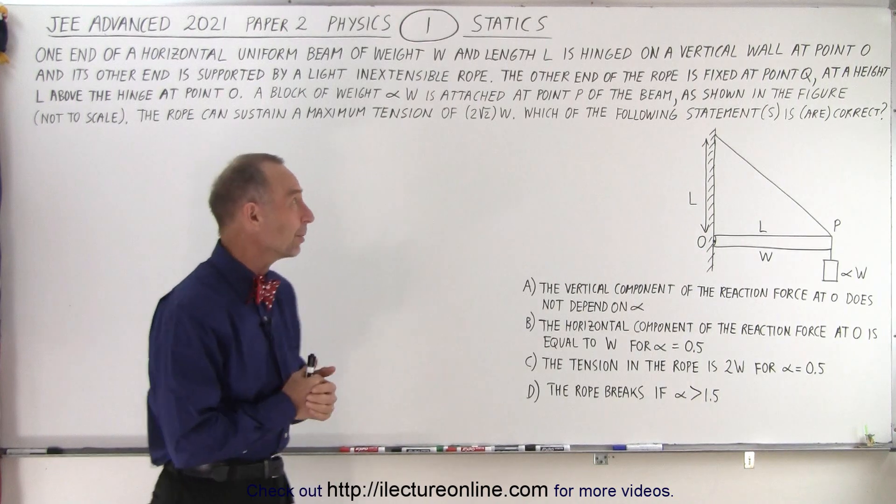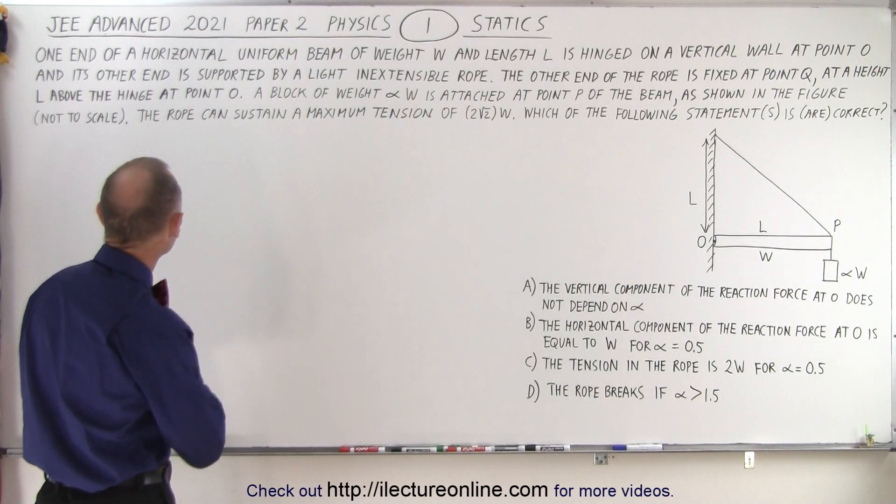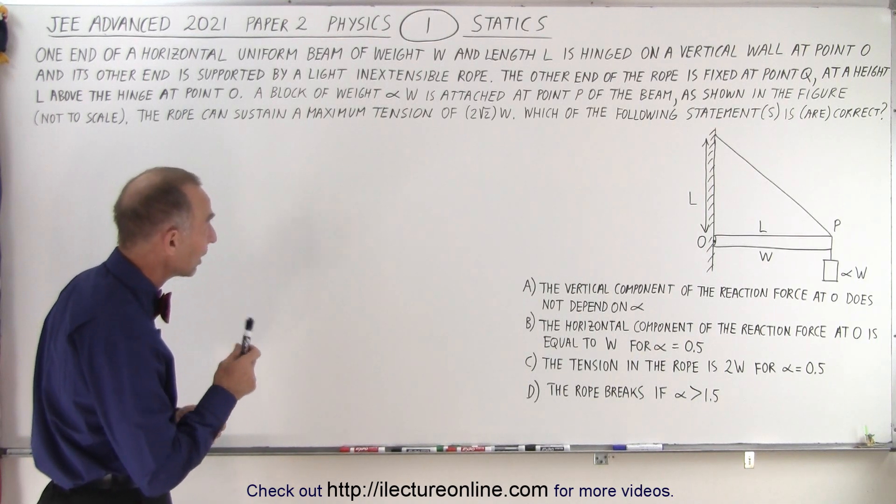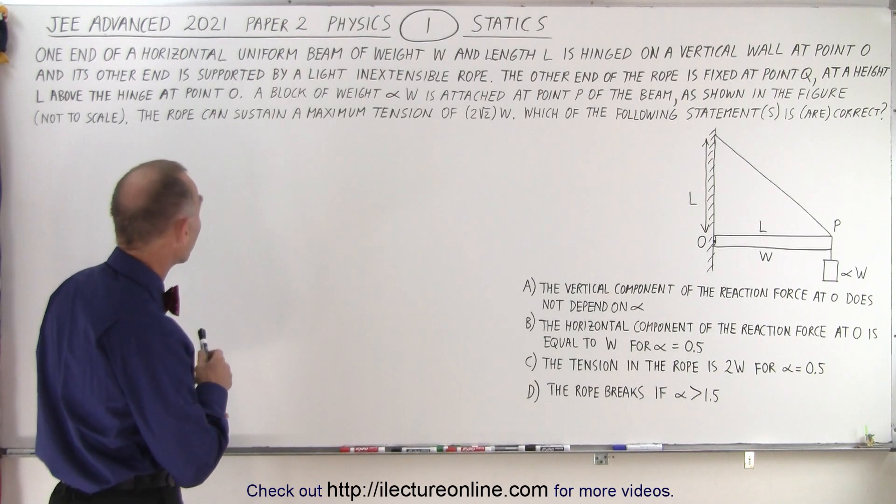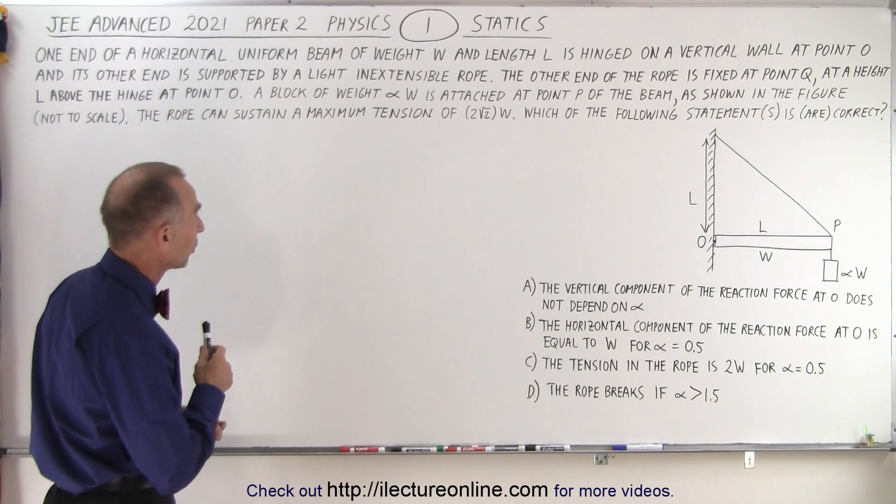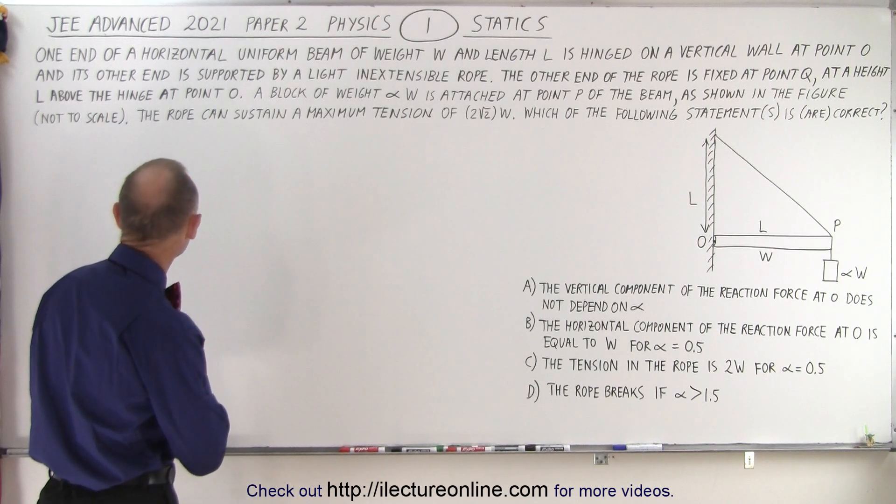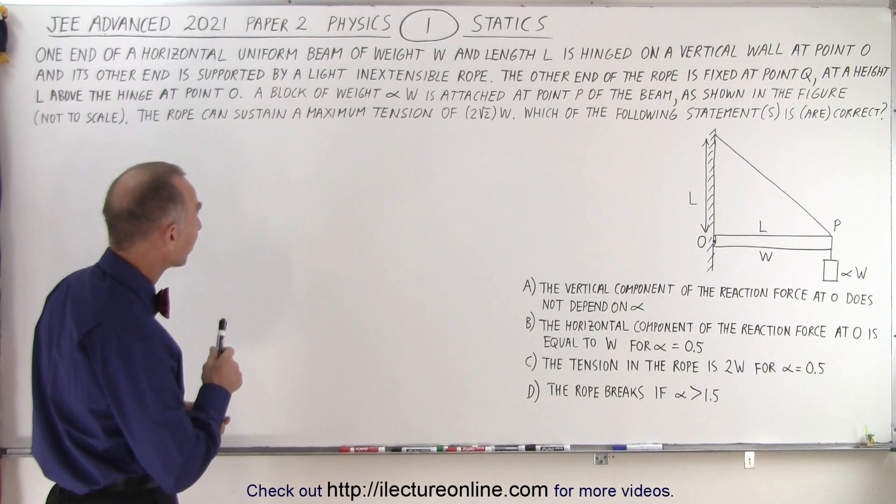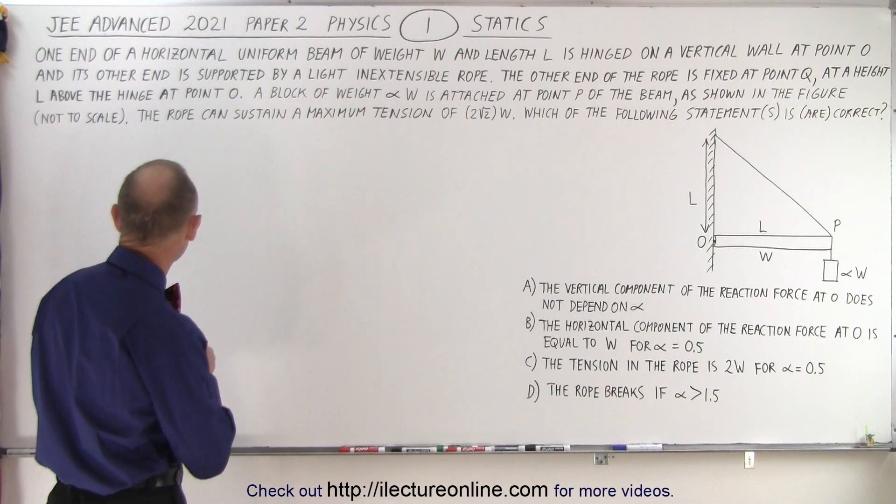It's not too bad of a problem. It deals with statics. One end of a horizontal uniform beam of weight W and length L is hinged on a vertical wall at point O, and its other end is supported by a light inextensible rope. The other end of the rope is fixed at point Q at a height L above the hinge at point O. A block of weight alpha W is attached at point P of the beam, as shown in the figure.